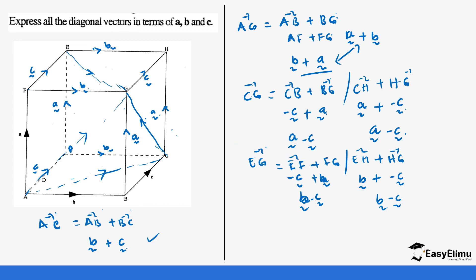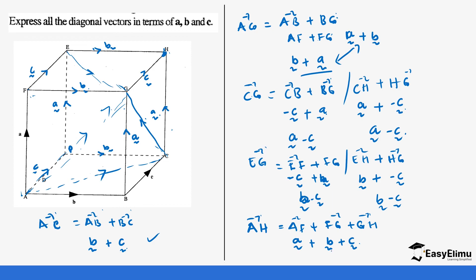Let's pick the diagonal at the center: from A to H. To move from A to H, we take AF plus FG plus GH. AF is vector A, FG is vector B, and GH is vector C. So our answer for diagonal AH is A plus B plus C.